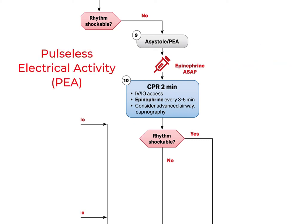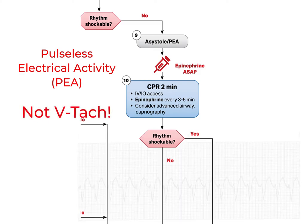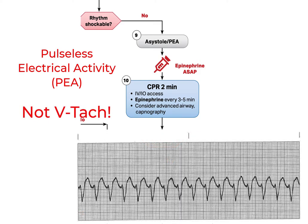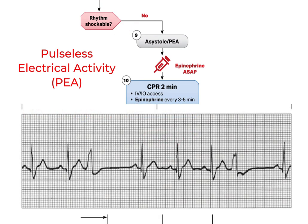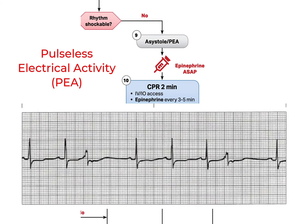Pulseless electrical activity, or PEA, is the term we use when we see an organized rhythm on the monitor that produces no palpable pulse. Remember that you do not put VTAC without a pulse in this category. While it meets the technical definition of electrical activity with no pulse, we treat it the same as VFib because we know it is likely to respond to defibrillation. PEA can present with any organized rhythm — if you find yourself thinking that what you see on the monitor should be producing a pulse and it's not, that's PEA.